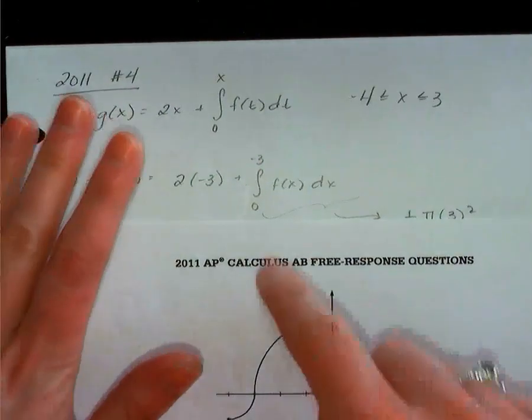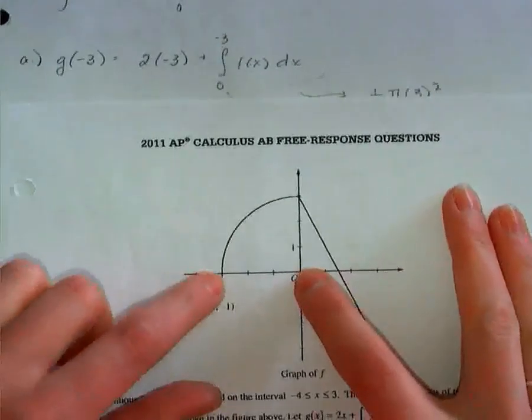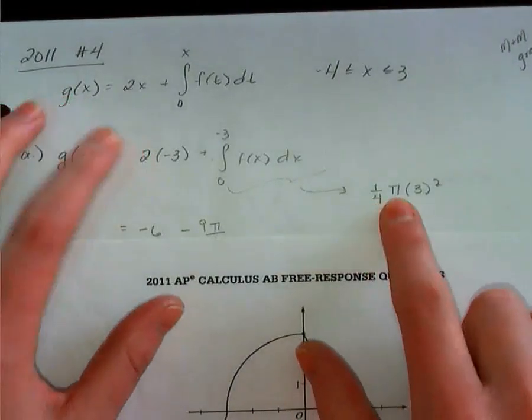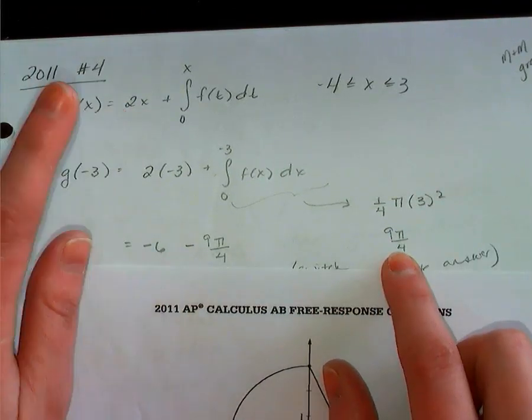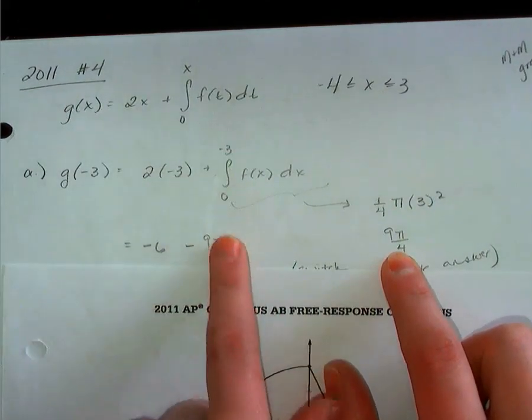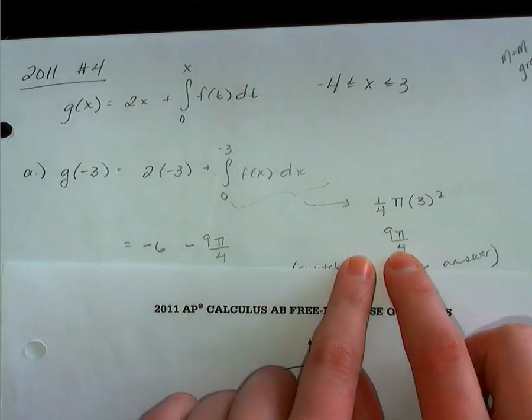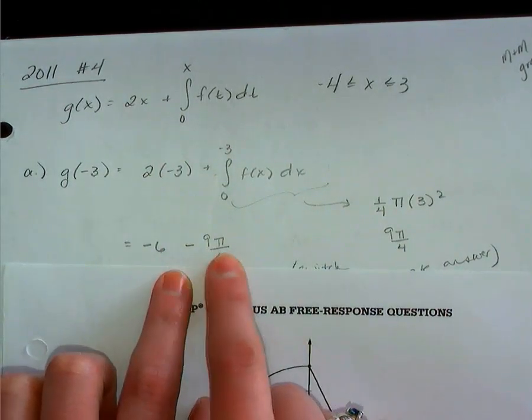Now, I need to find the area under the curve of f from negative 3 to 0. That's my quarter circle right there. So it's 1/4 pi r squared. So that becomes 9π over 4. However, is your lower limit actually at the bottom of your integral? No, so you must negate that. So your answer becomes negative 6 minus 9π over 4.